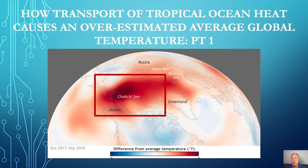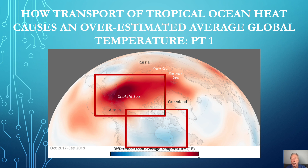It also demonstrates why it's an abuse of statistics to average extreme warming temperatures in the Arctic with temperatures elsewhere, such as the cooling in North America. Averaging two temperatures caused by vastly different dynamics is meaningless and useless for understanding climate change. It's as useless as averaging apples and oranges just because they're both fruits.